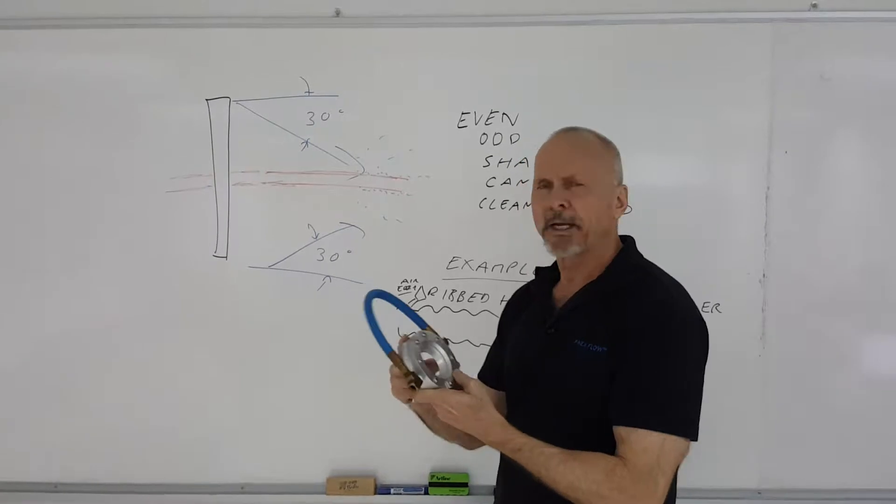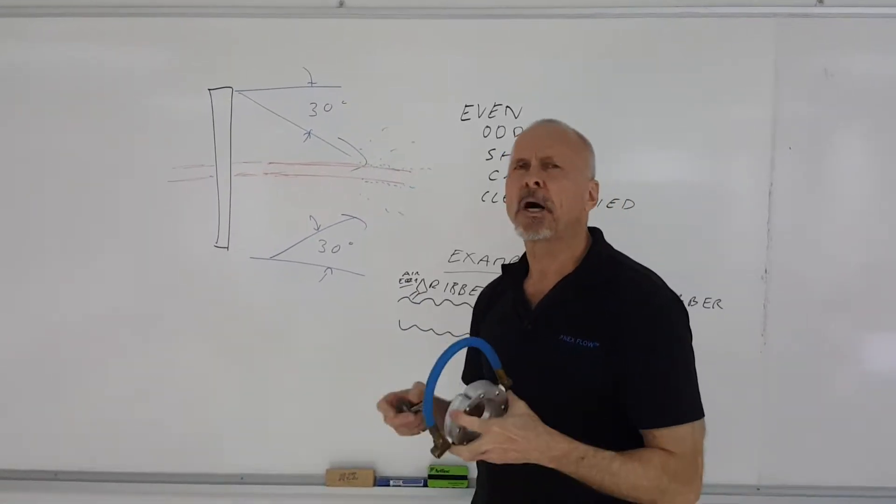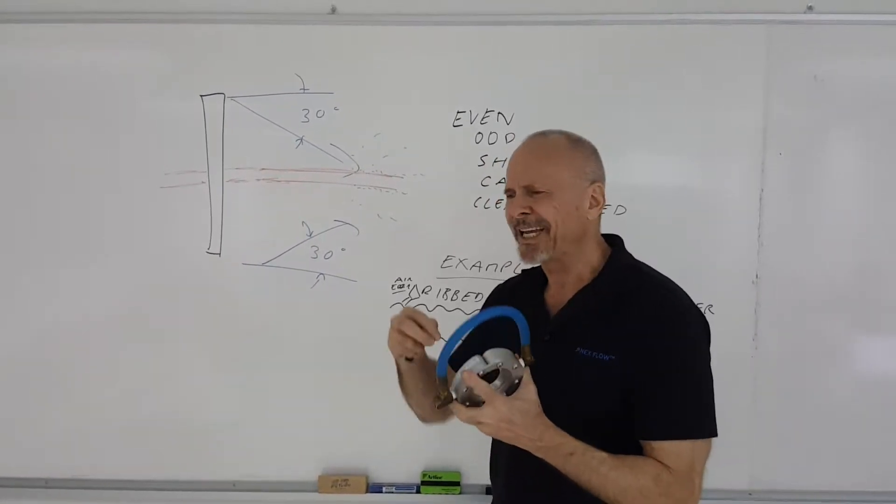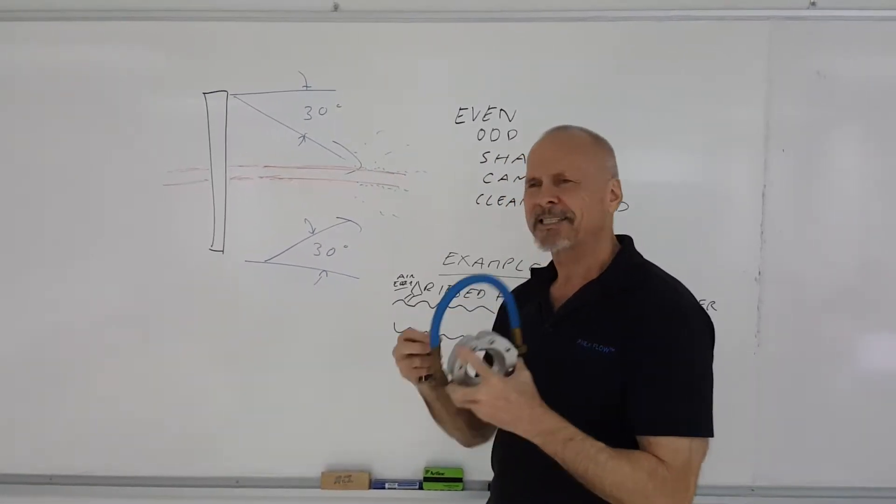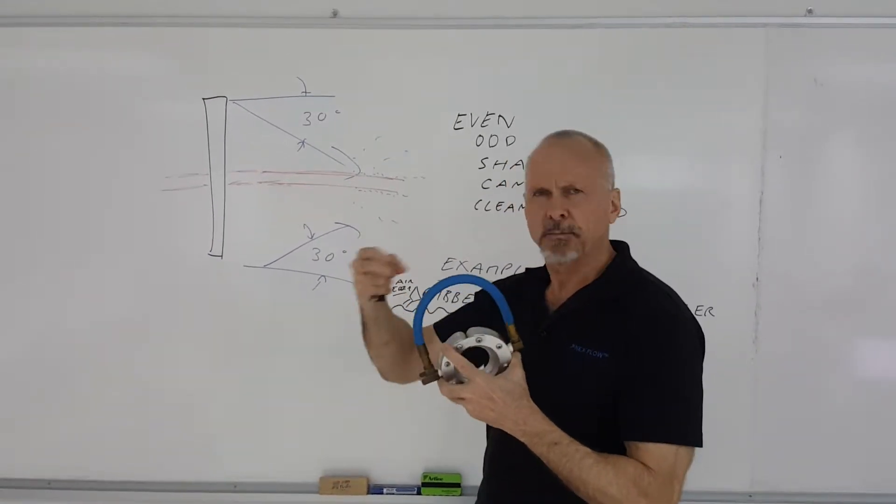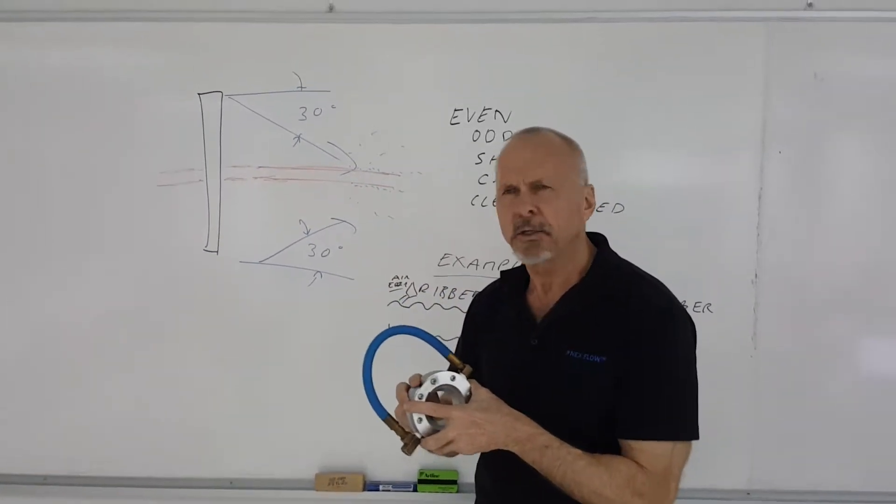which are used to dry extruded products, is how well do they clean or dry a part that is not always smooth or has some hidden corners or tricky edges that have some dirt or liquid that's stuck in there. How do you dry or clean those types of things?